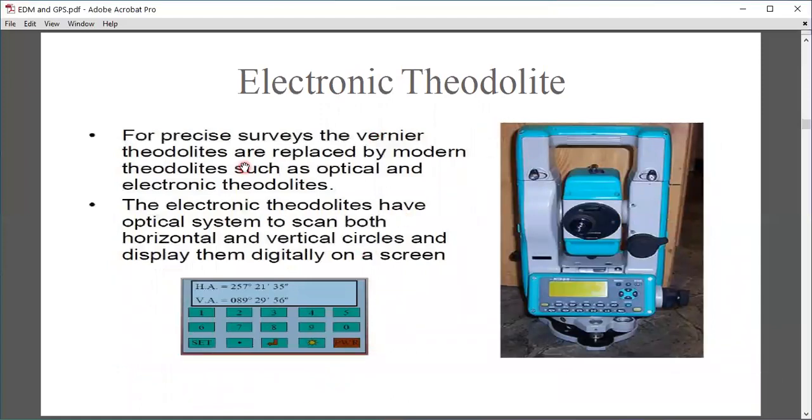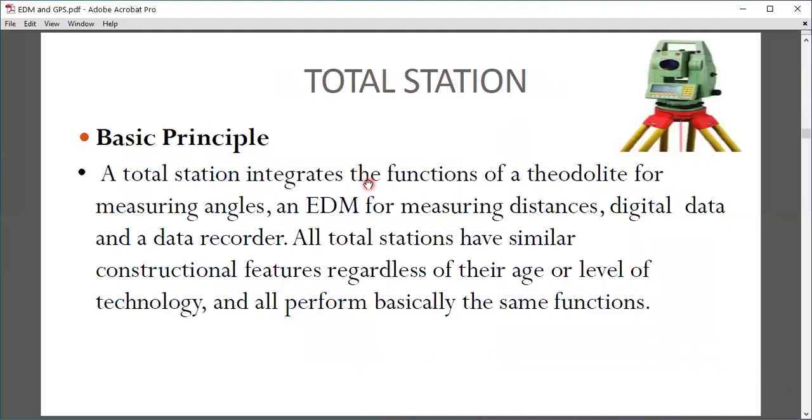Electronic theodolite: For precision work, the old Vernier theodolites are replaced by modern theodolites such as optical and electronic theodolites. Electronic theodolites have an optical system to scan both horizontal and vertical circles and display them on a digital screen. In this picture you can see the vertical angle and horizontal angle.